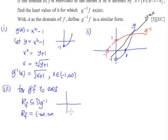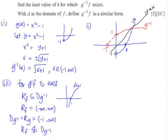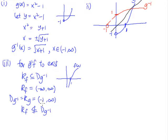The domain of g⁻¹ is the range of g, which is from -1 to infinity. Looking at this, the range of f (negative infinity to positive infinity) is not a subset of, nor equal to, the domain of g⁻¹ (which is [-1, ∞)). Because this condition is not satisfied, g⁻¹f does not exist.